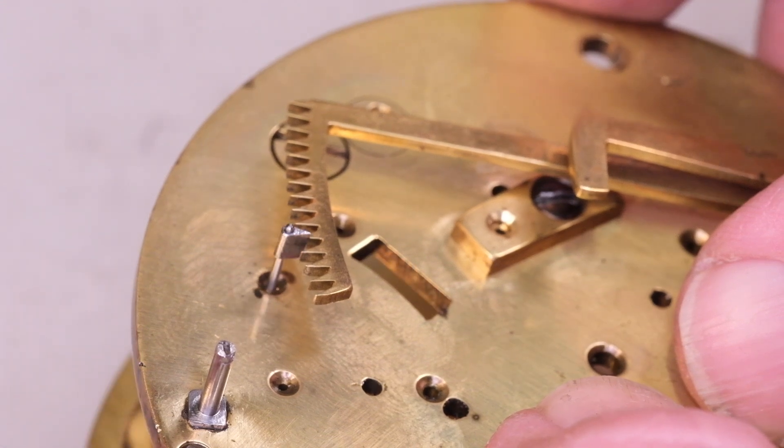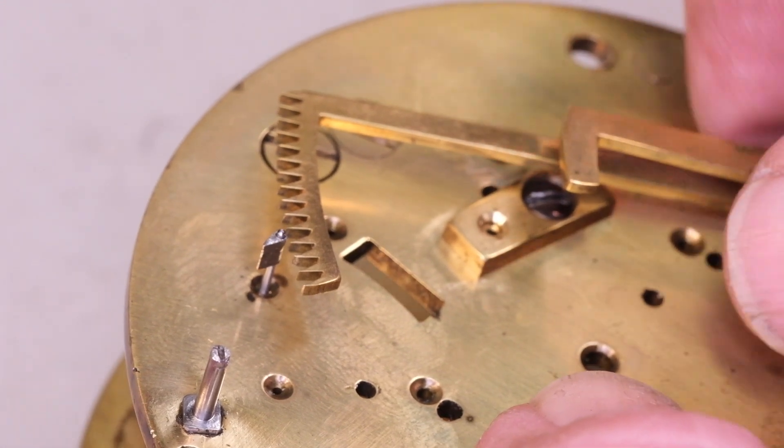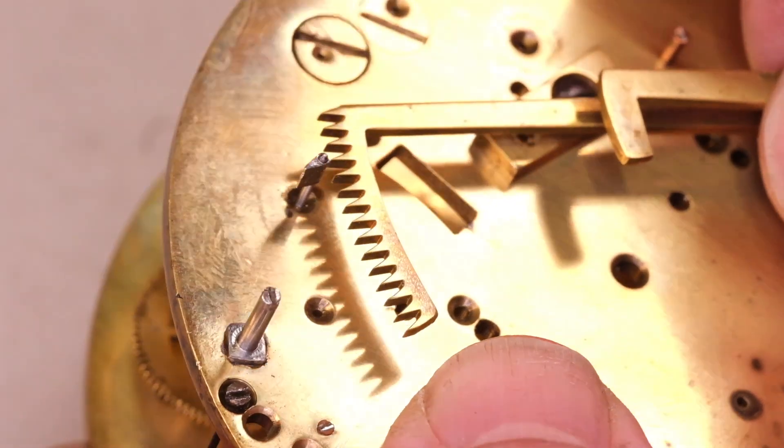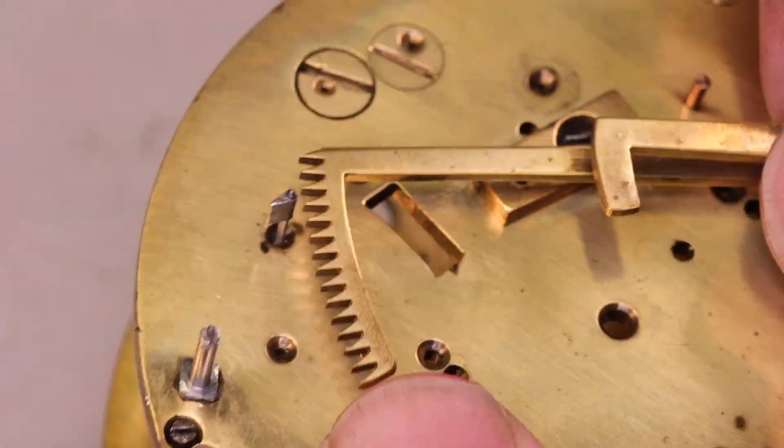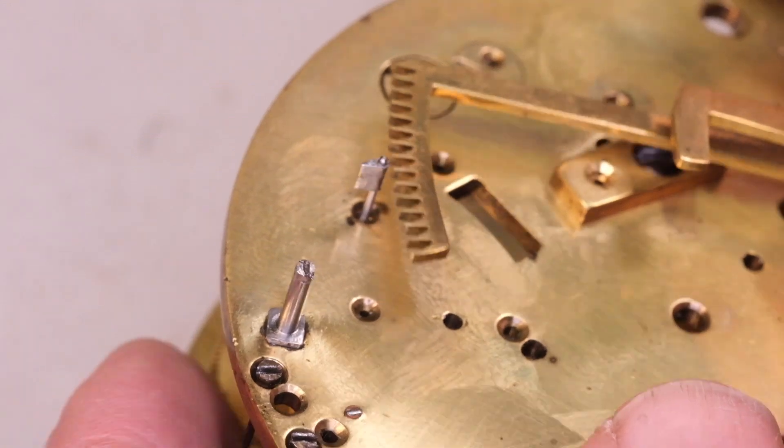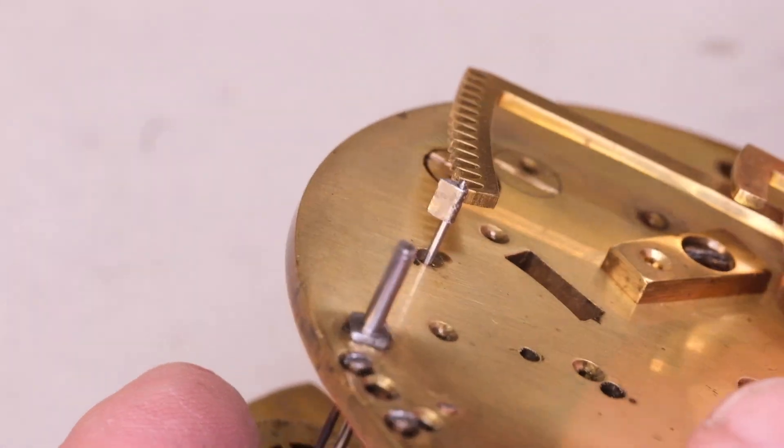And there we are, the gathering pallet is a good fit. It doesn't need driving on, it's just fitted by wringing it on by twisting it onto the arbor, and that's the way that it's removed as well.